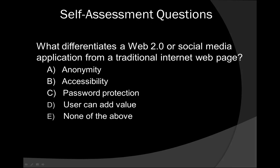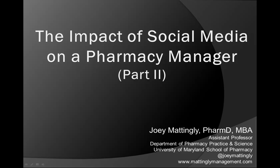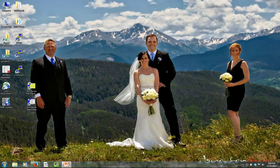Let's end this section with a question — and you guys know if I'm giving you a question, it might show up on a quiz or exam. What differentiates a Web 2.0 or social media application from a traditional internet web page? Is it A) anonymity, B) accessibility, C) password protection, D) the user can add value, or E) none of the above? The answer is that the user can add value — that's the main differentiator between social media and more traditional web pages. We'll jump over to part 2; I'll give you a little bit of a break and come back for the next segment.